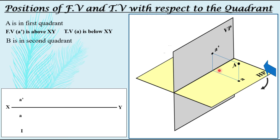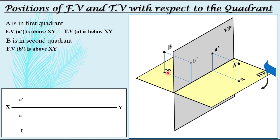Now consider point B placed in the second quadrant. We are looking from the same direction — the observer's direction does not change for any quadrant; it remains the same for all four quadrants. As you can see, B', the front view, will again be obtained on the vertical plane above the XY line. Whereas if you are looking from the top, the top view of B can be obtained on the horizontal plane. For the second quadrant, B' — the front view — is above the XY line.